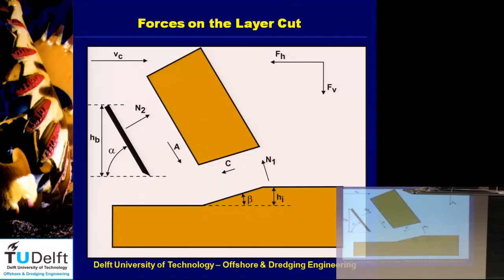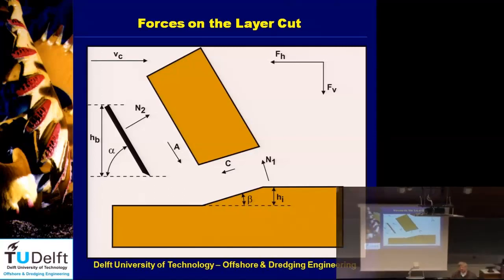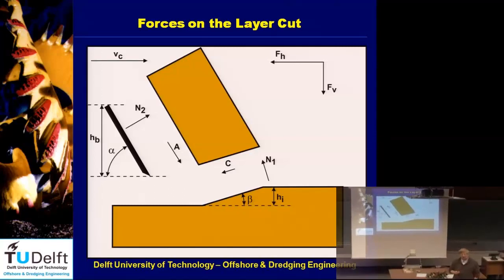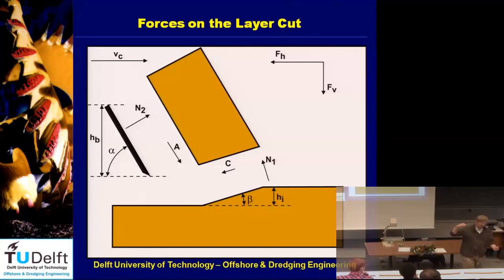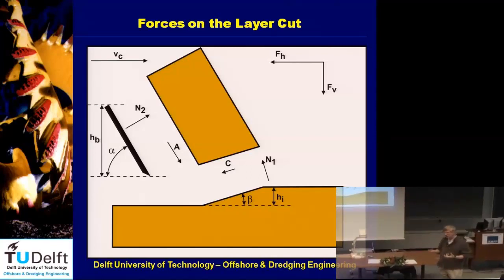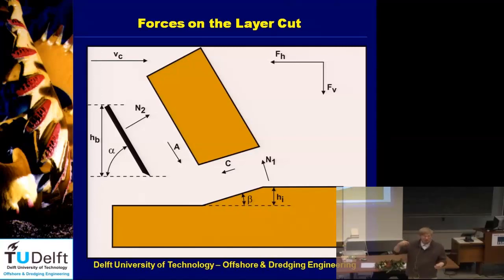In clay we only have the cohesive force in the shear plane and a normal force. We assume there is no friction in clay — this is the phi-equals-zero concept. In sand, if you increase the normal stress on a sample, you compress the sand, but sand still has reasonable permeability, so water flows out — we call that a drained condition.